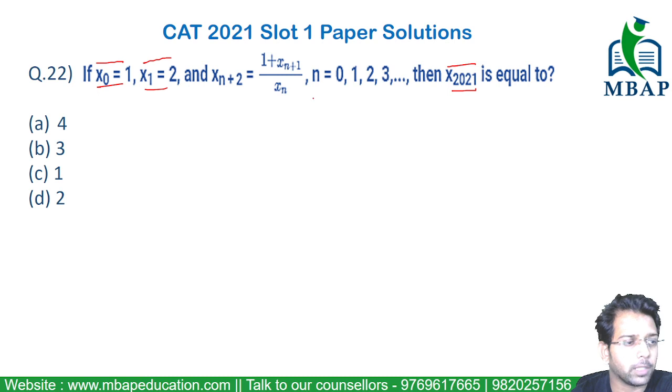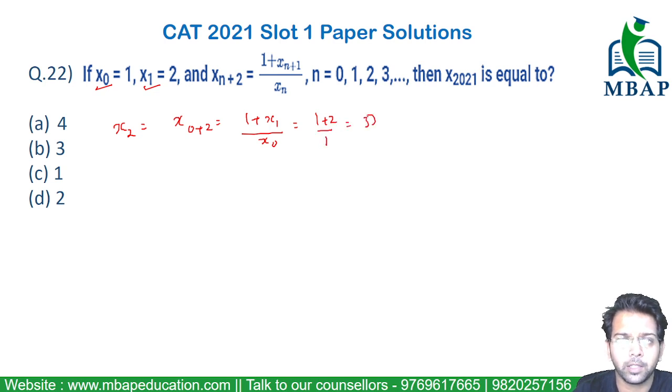Unless you find the logic or pattern between all the consecutive values of x, you will not be able to find the answer. So x₀ has been given to me, x₁ has been given to me. Let's find the value of x₂. Now x₂ will be x₀₊₂, which will be 1 plus x₁ divided by x₀. What is x₁? x₁ has been given as 2. So this becomes 1 plus 2 divided by 1, which will be 3.